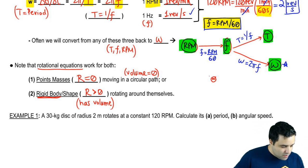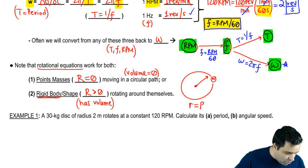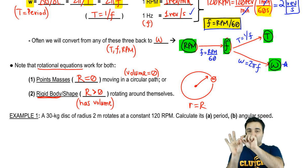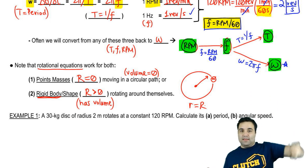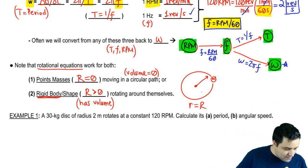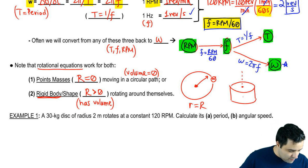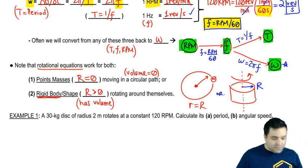So you can either have a point mass, I'm going to draw a tiny little m going around a circle, and the circle has a radius r. In this case, little r is the distance from the center to the edge of the circle, and you are going around at the edge. Or you can have like a cylinder spinning around itself, and that cylinder has a radius of r. So you can have either one of these two situations.